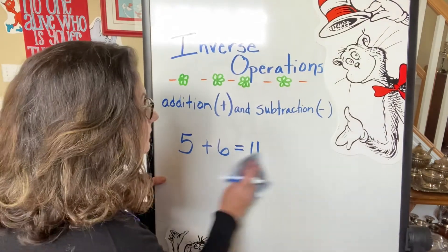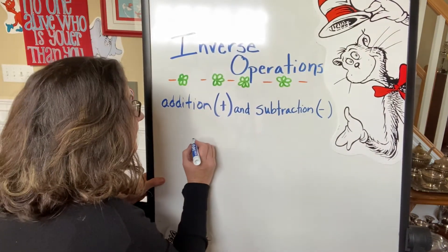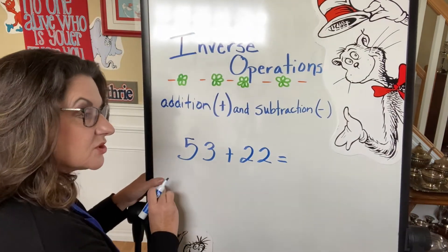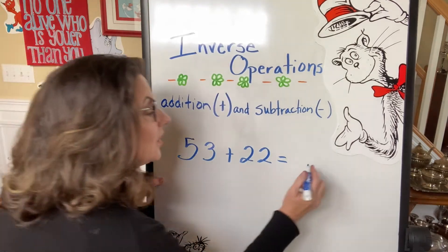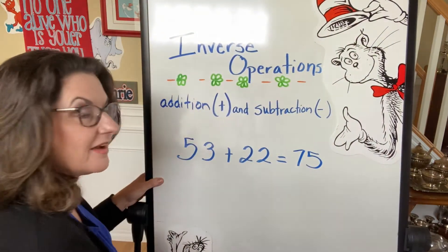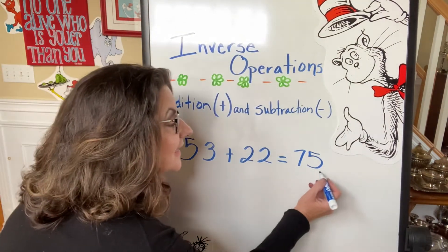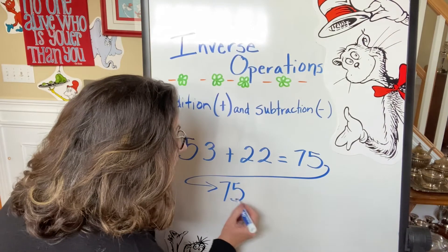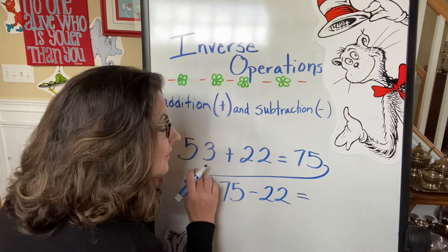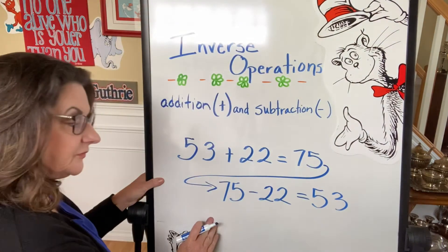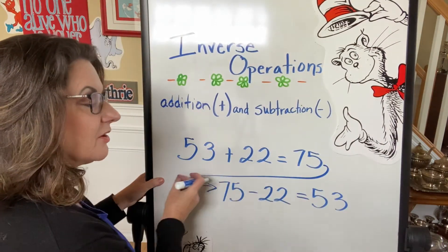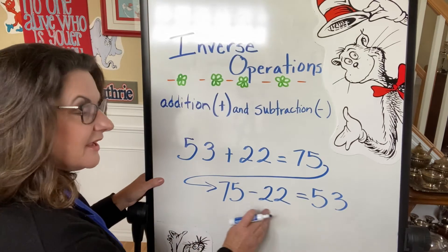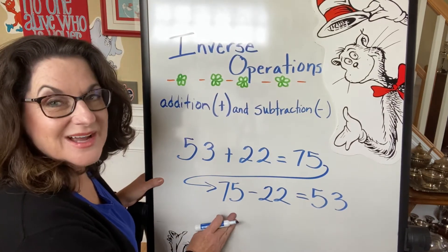Let's do a harder one. Let's say 53 plus 22 equals — I could use some scrap paper if I needed to line that up, or I could just add my ones and then add my tens — equals 75. So, if I wanted to do a turnaround fact, I've got to start with my minuend. So, 75 minus 22 equals 53. That's the difference.